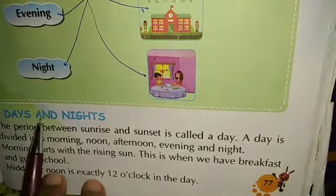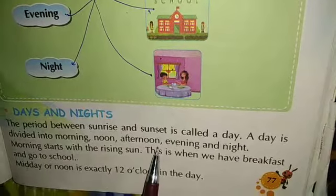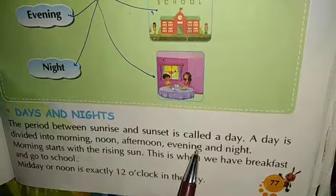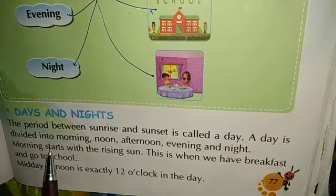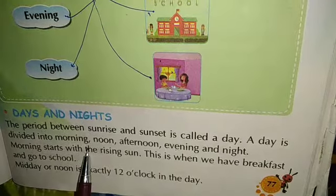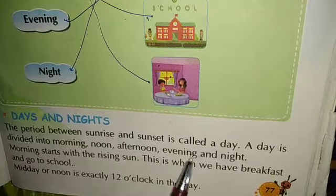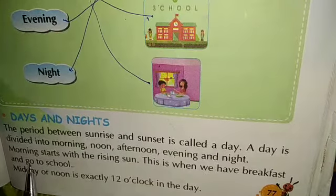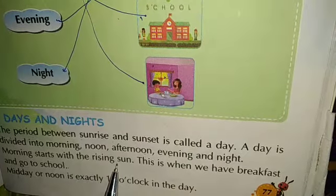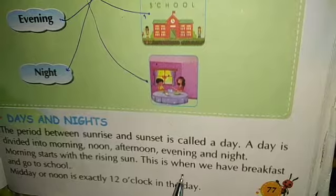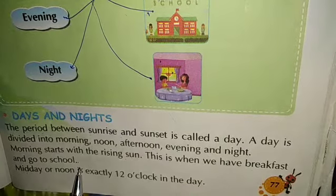Days and nights. The period between sunrise and sunset is called a day. A day is divided into morning, noon, afternoon, evening, and night. Morning starts with the rising sun — this is when we have breakfast and go to school.